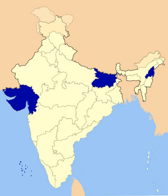On 26 November 2015, Bihar Chief Minister Nitish Kumar announced that alcohol would be banned in the state from 1 April 2016. Kumar officially declared the total ban on 5 April 2016, stating that all types of liquor would be banned and that sale and consumption of any type of alcohol in hotels, bars, clubs and any other place will be illegal from that day onwards. Violating the law carries a penalty of 5 to 10 years imprisonment.